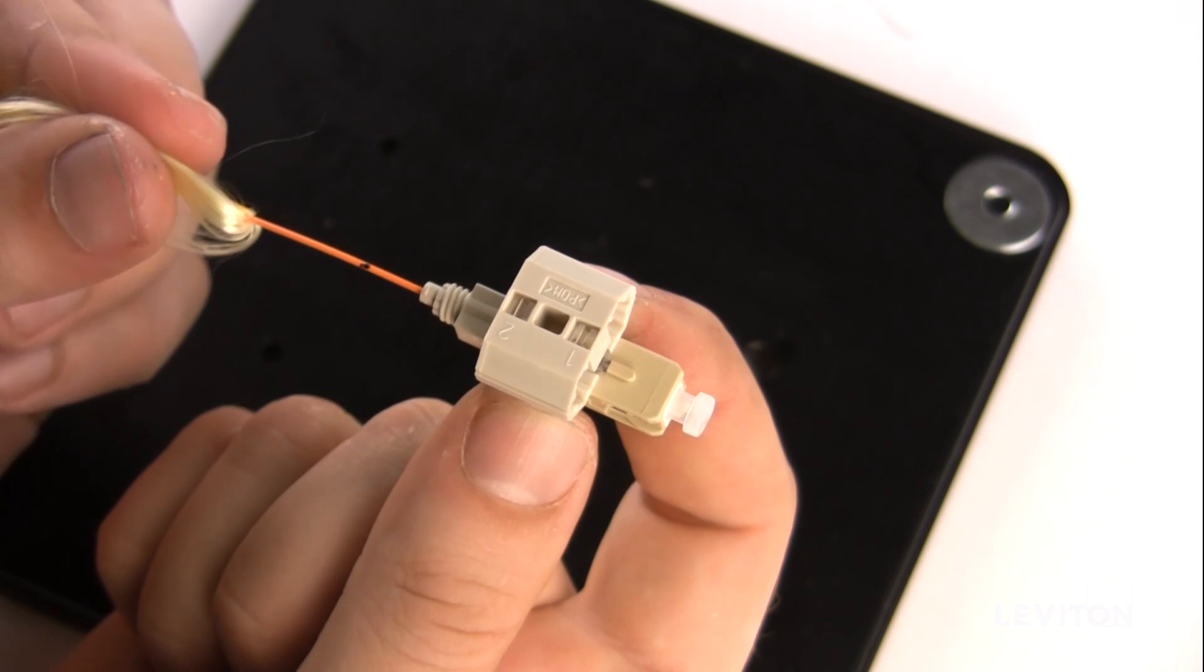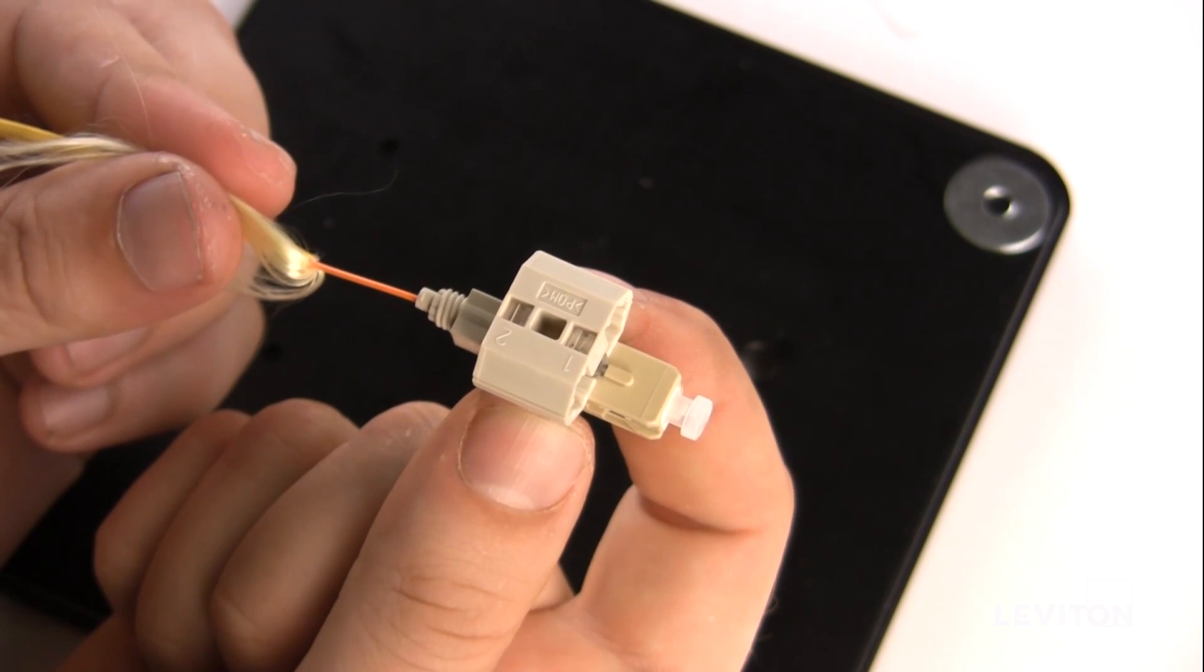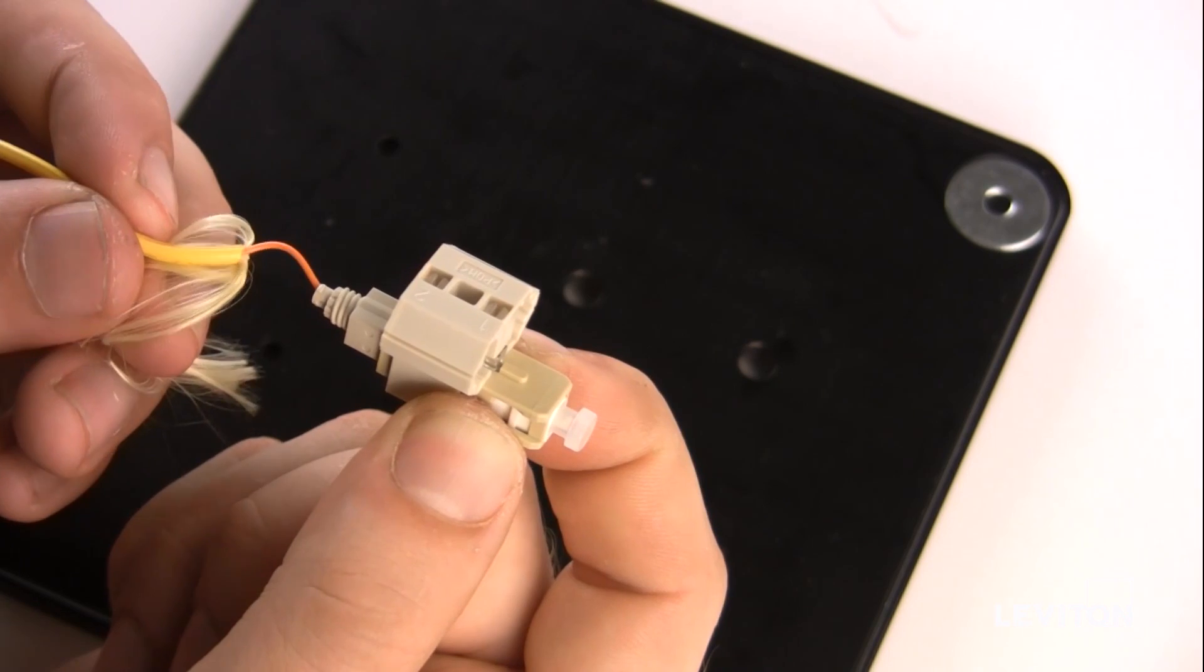Insert the fiber slowly into the connector until the connection is made and your mark is hidden. Form a bend in the fiber to maintain the connection.